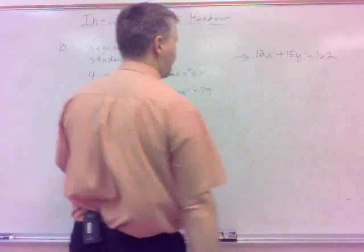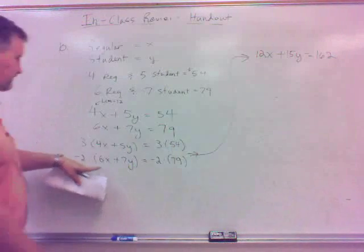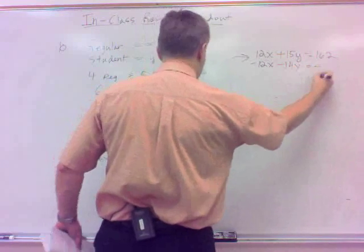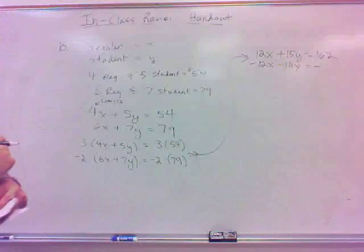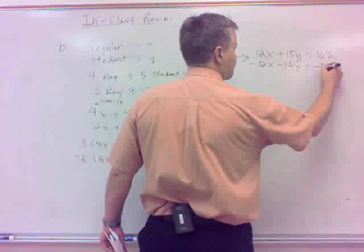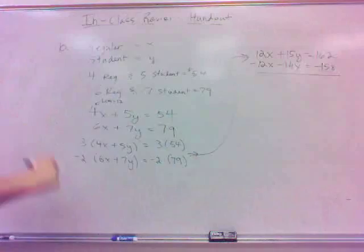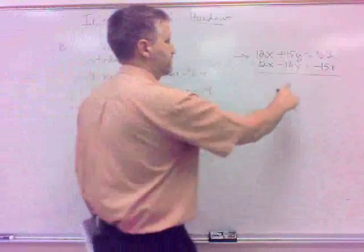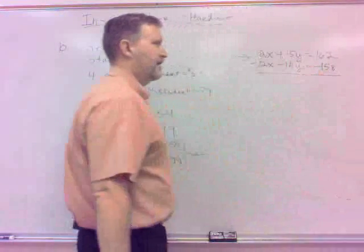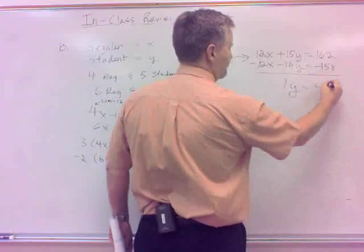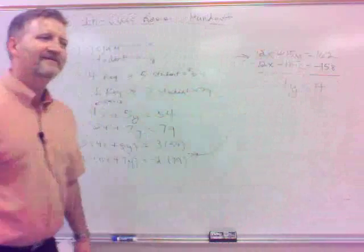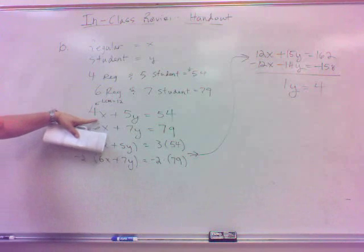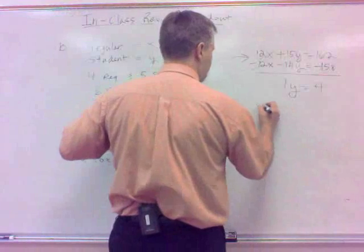So, that's going to give me, let's go around here, 12x plus 15y equals 162. Does that sound okay? For the top one, and then the bottom is going to be negative 12x minus 14y equals negative, two times 79 is negative, 158. Hey, look at that. That's going to work out really, really nicely. Obviously, those that eliminate, what's 15y minus 14y? That's one y, isn't it? Equals four. So, there's my y. That's my student price.